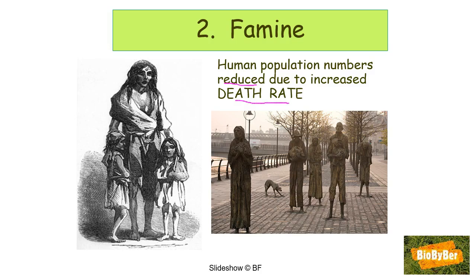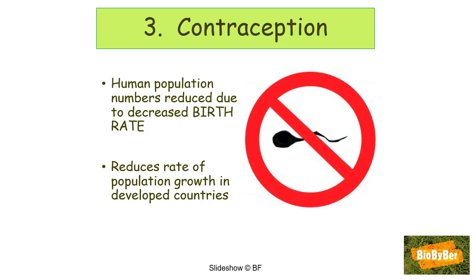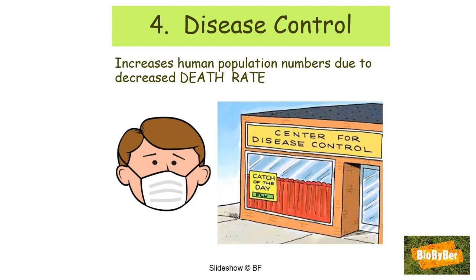Contraception: the increased use of contraceptives has reduced the birth rate and the rate of population growth, especially in developed countries. Disease control: the use of vaccines, antibiotics, better sanitation, and insecticides to control insect-borne diseases have all helped reduce the death rate. With fewer people dying, there is an increase in human numbers, especially in developed countries.